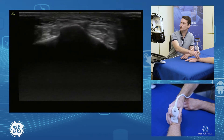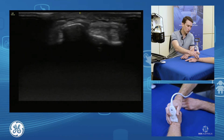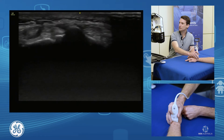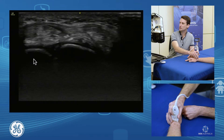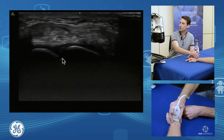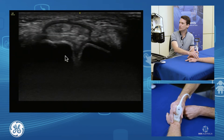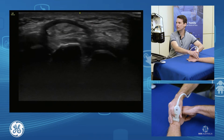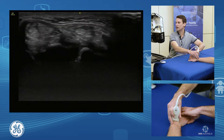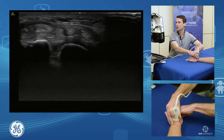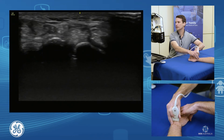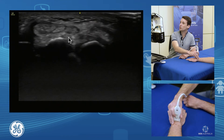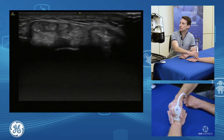Coming back across, we're going to have a look at our scapholunate ligament. The landmark we want for that is our Lister's tubercle. We find our Lister's tubercle, put our probe on, and then just fall off distally — we will have our scaphoid and lunate there. I'm just going to roll around to be perpendicular to that ligament. We can see that ligament sitting between the two bones. To stress it, we can radial and then ulnar deviate. We can see that nice intact ligament across there. This is also a very common spot just underneath our extensor digitorum communis compartment four tendons for dorsal ganglions, so we want to assess up through there.